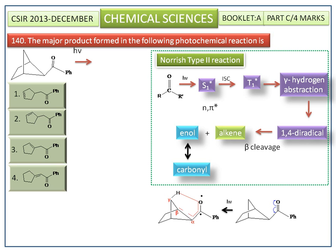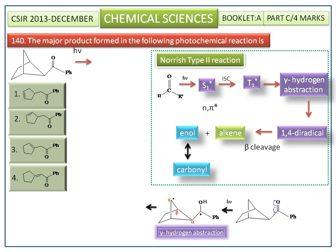It is easier to abstract the gamma hydrogen, so the gamma hydrogen is cleaved as a hydrogen radical. This hydrogen radical is abstracted by the oxygen radical, forming a hydroxy functional group. This intermediate is called the 1,4-biradical, which then undergoes beta cleavage giving two more radicals.